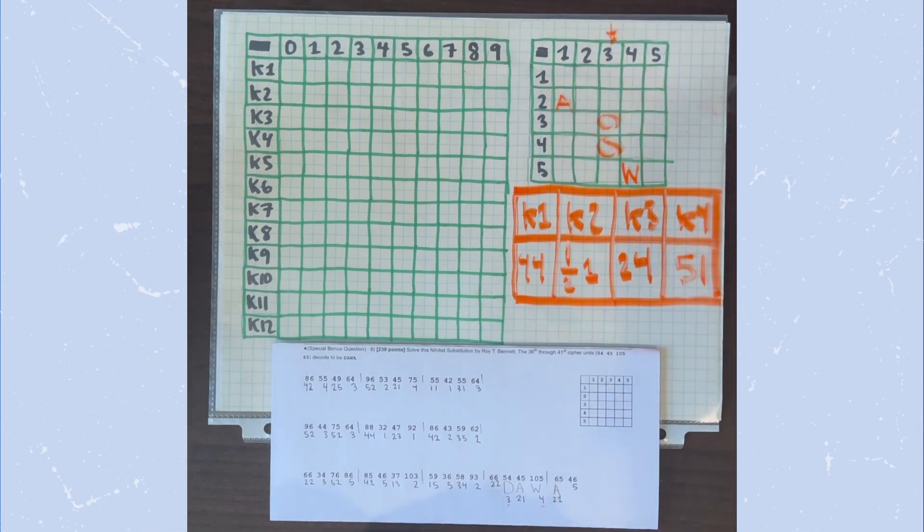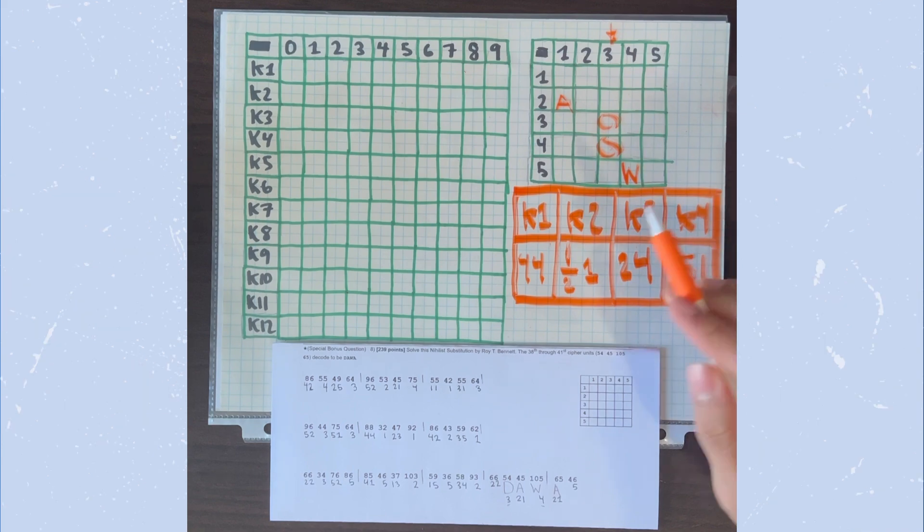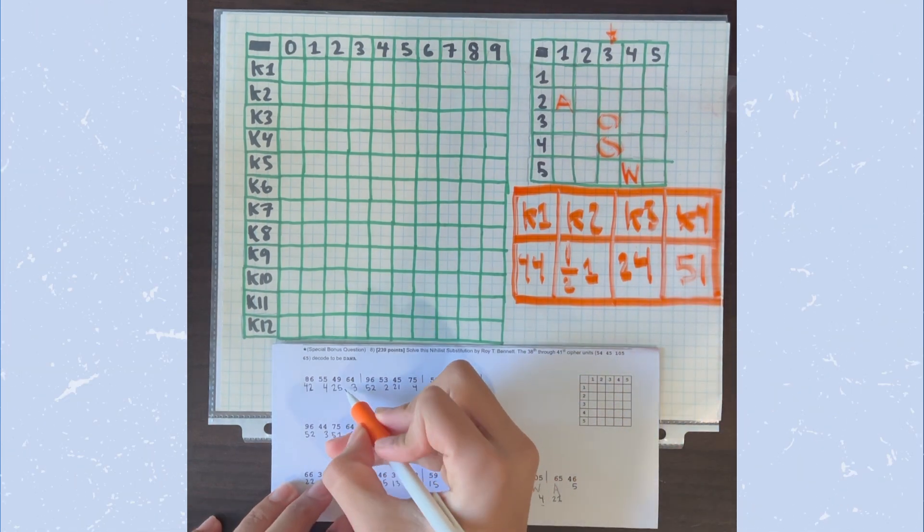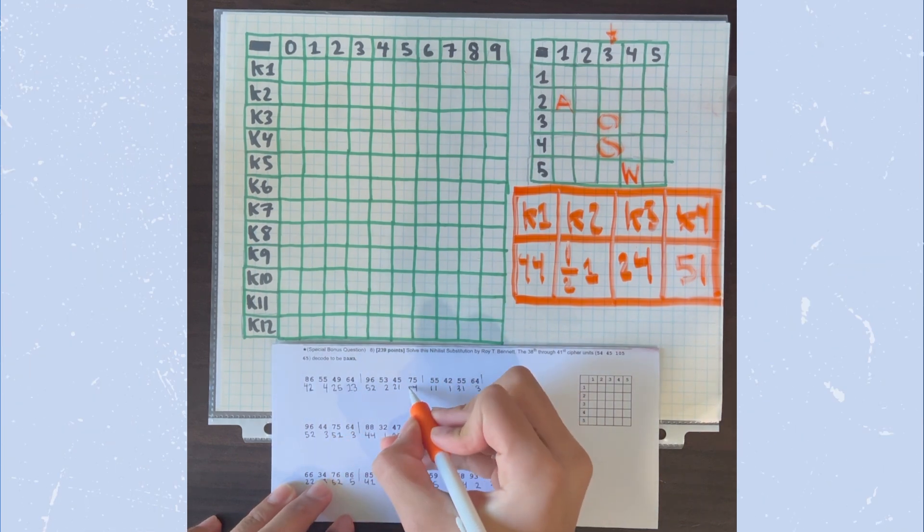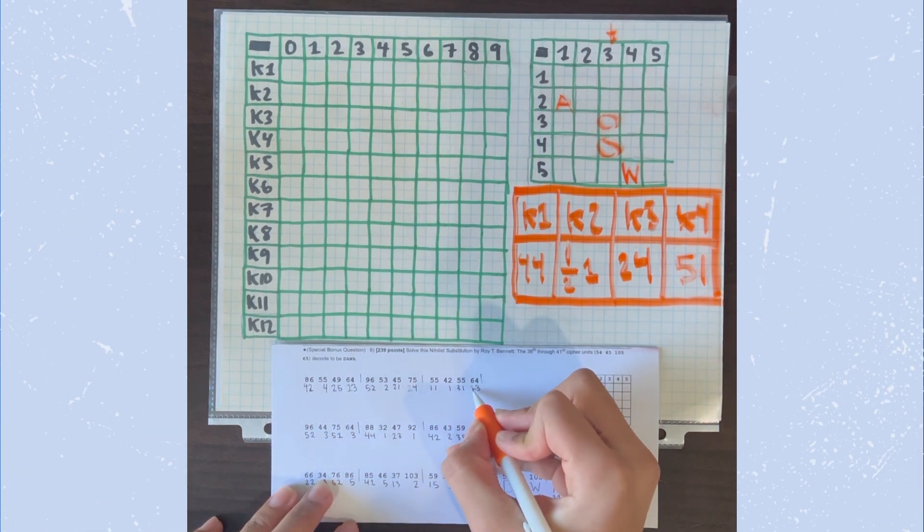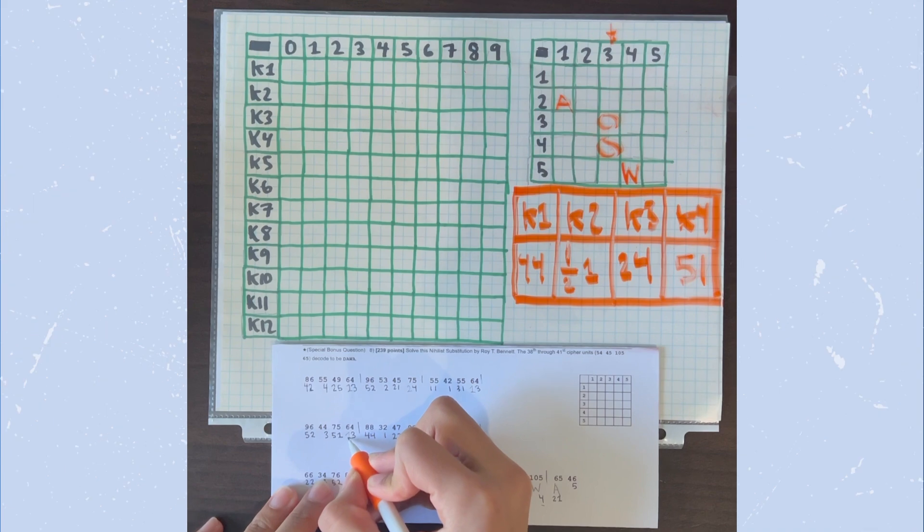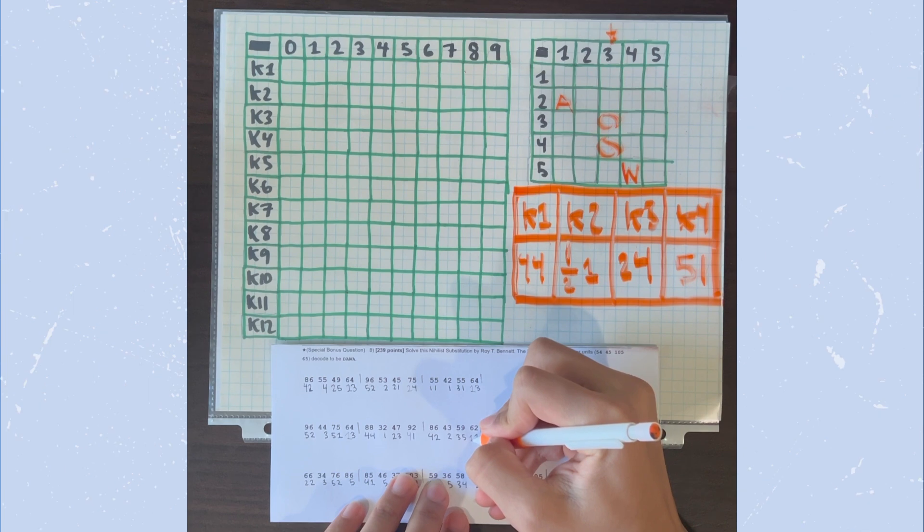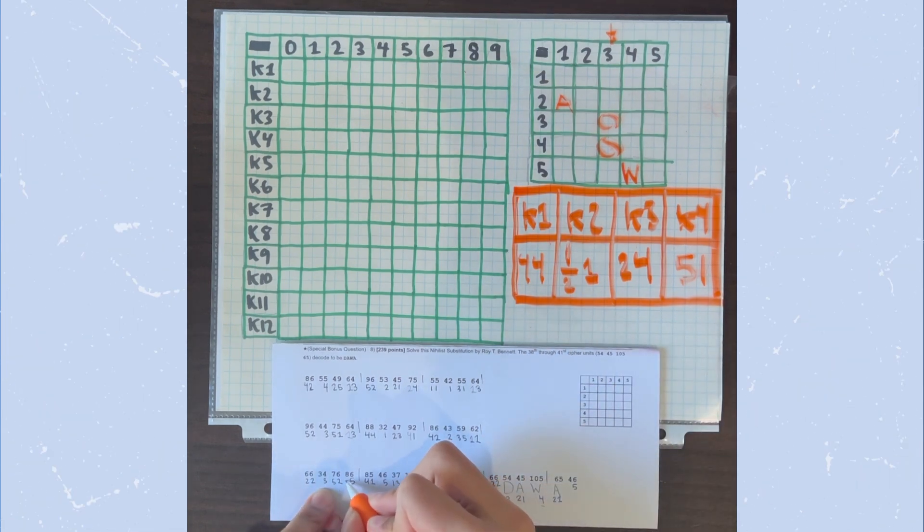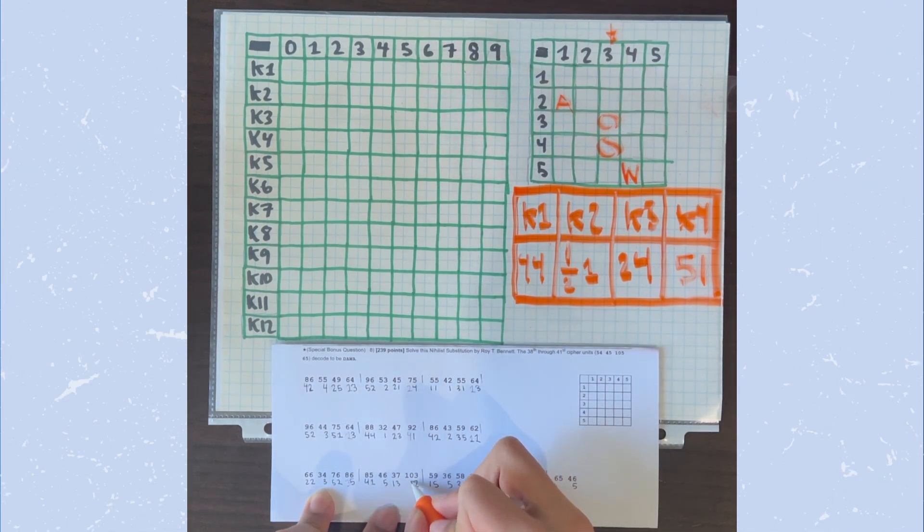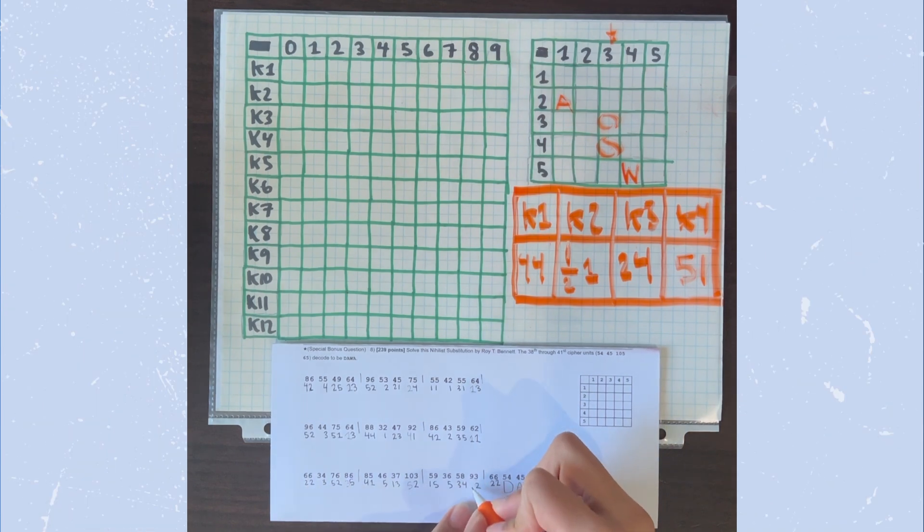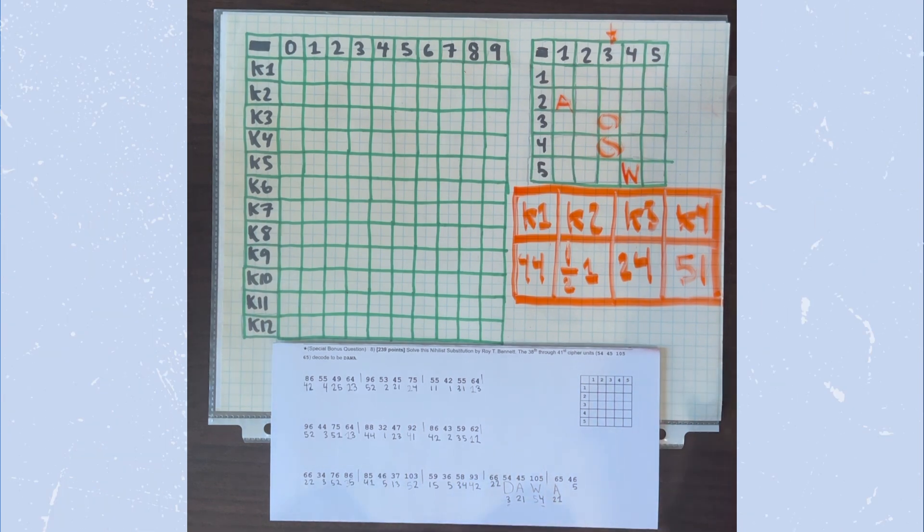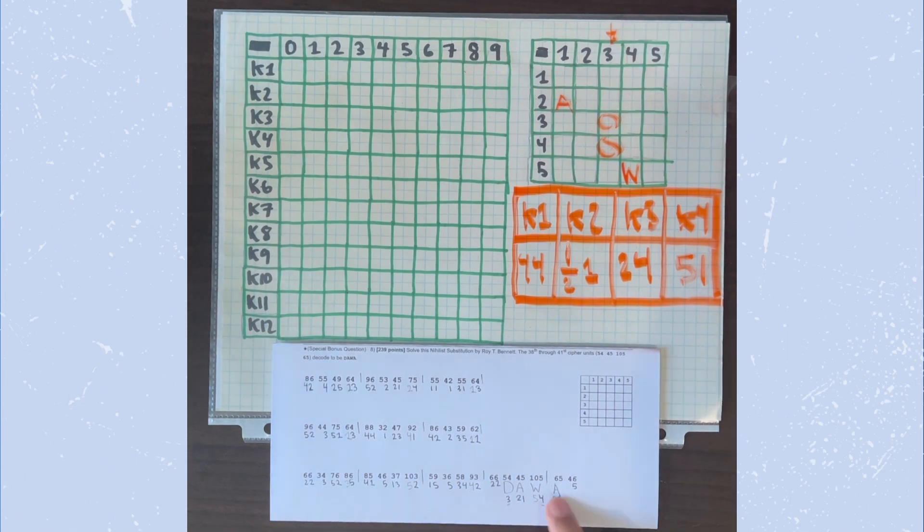So now that we know that K4 is 51, we can now go to the rest and subtract everything by 51. So right here, we would have 13, 24, 13 again, 13 again, 41, and then 11 right here. If we go back, 35, 52, 42, and then 54. So that's what we have for the rest of these.